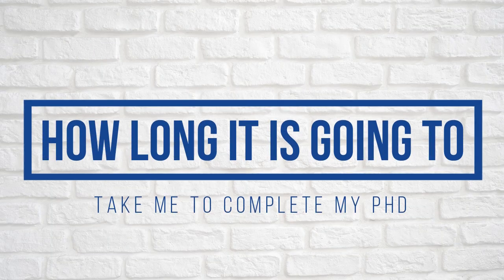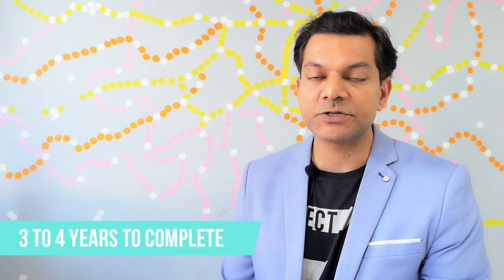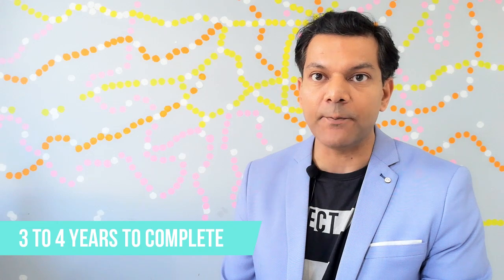The next question is how long is it going to take me to complete my PhD? So the answer to this depends upon different universities and different countries. For example, in Australia it may take a minimum of three or up to four years to complete your PhD in full-time mode. So that's a really long time.